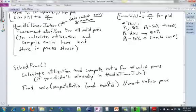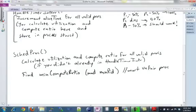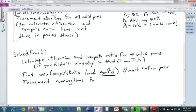So, we calculate the compute ratio. Then we find what the minimum compute ratio is. And then we know that that's the process we want to return. So, we want to increment the running time for that process because it's going to run one more quantum now. And then we just return it because that's the process that we want to schedule. Schedule most unfairly treating.